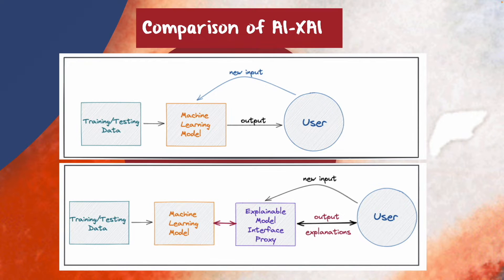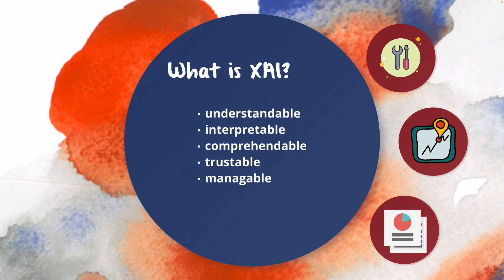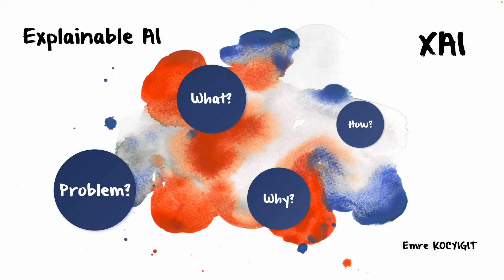On the other hand, in explainable AI, there is another proxy interface between the machine learning model and the user which explains the reason of this cognition, why not others. Okay, we saw what explainable AI is.